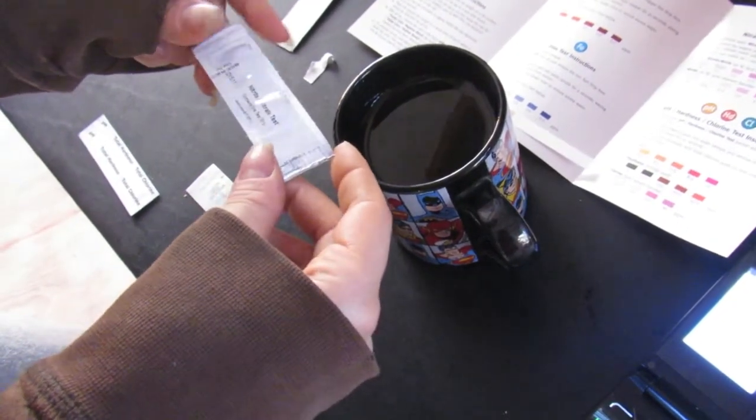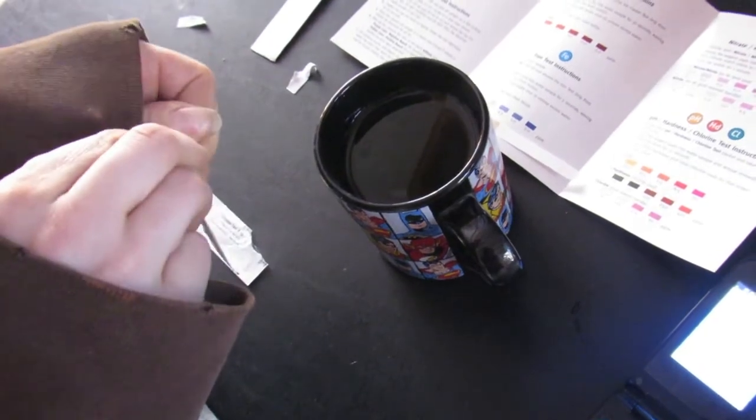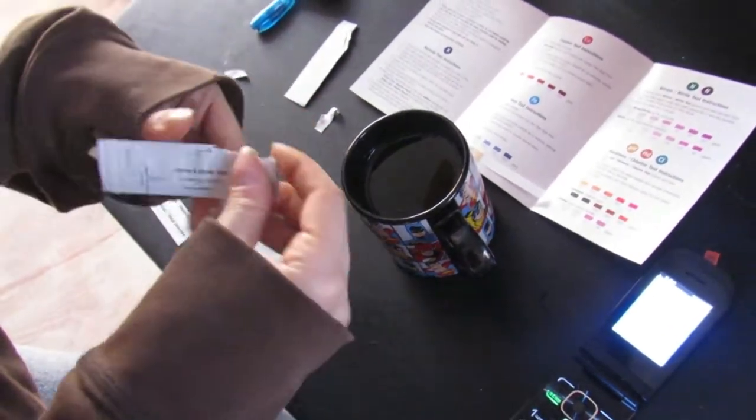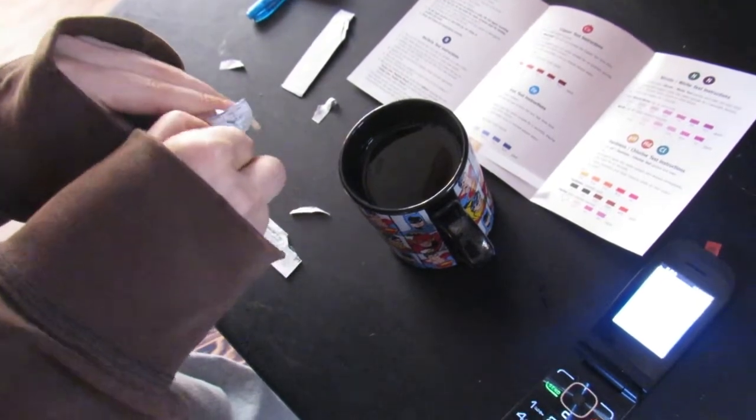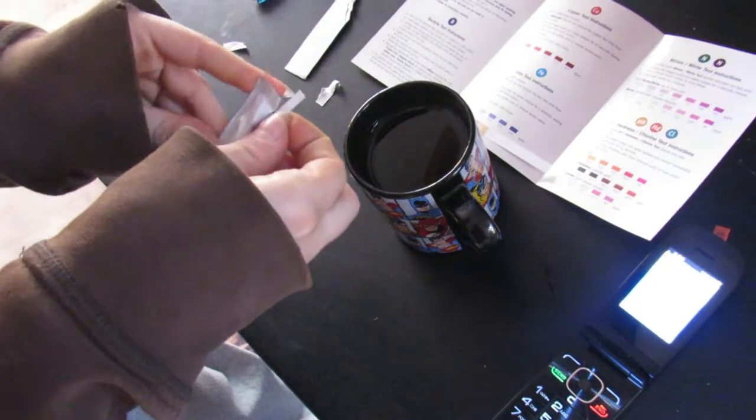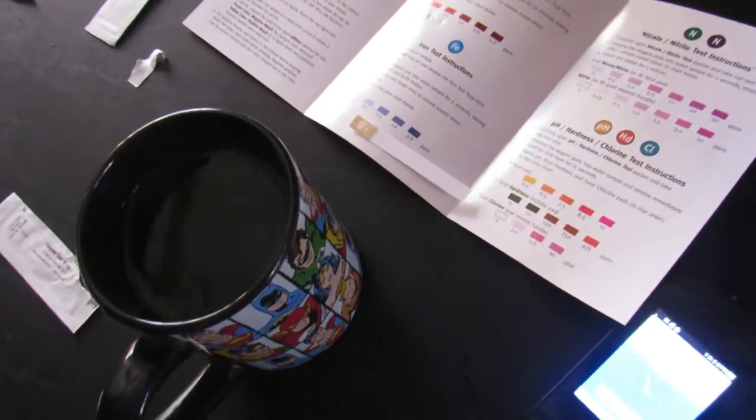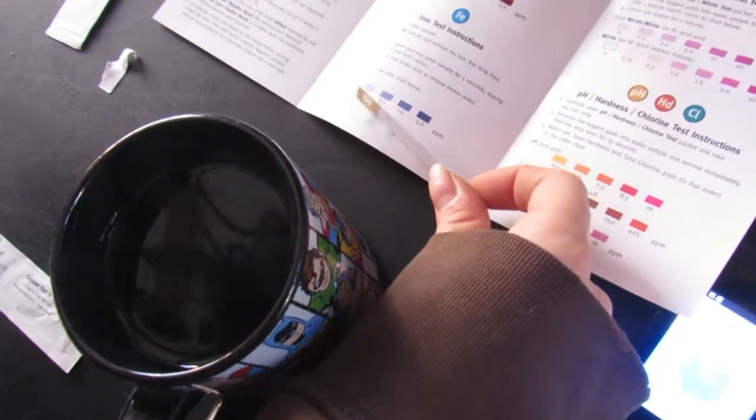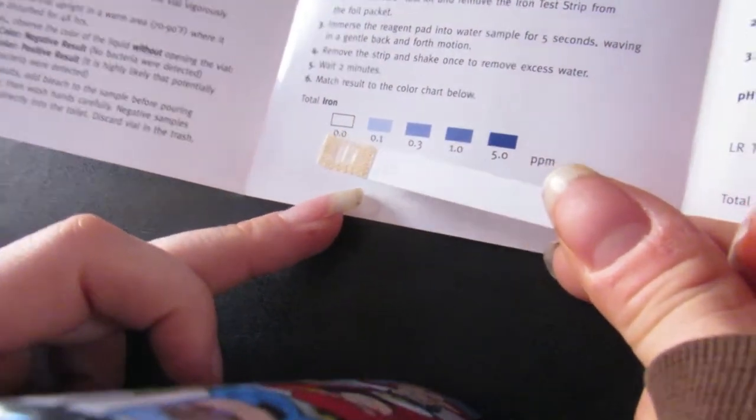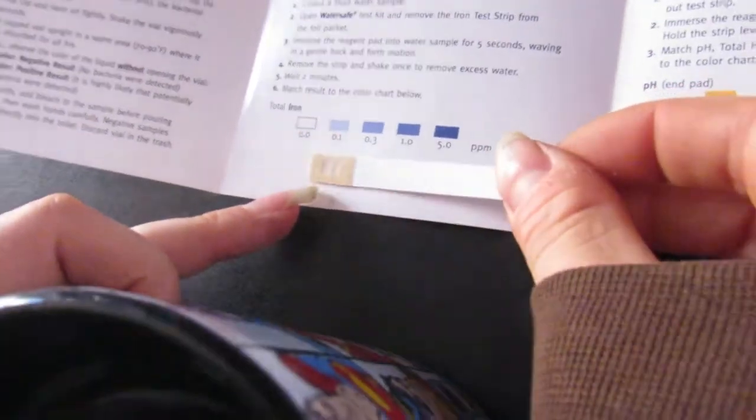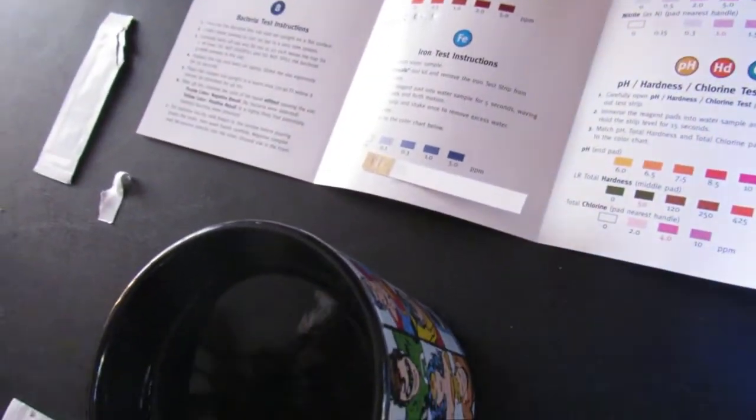We'll move on to the nitrate nitrite. Carefully open it and take out test strips. Still got my timer going for the other one. My two minutes for the iron test is up, so I'm going to check that one now. And it didn't really change. So that's good. It's a little bit more than the zero, but not even close to the 0.1. So we're looking good there. I'll write the results down.